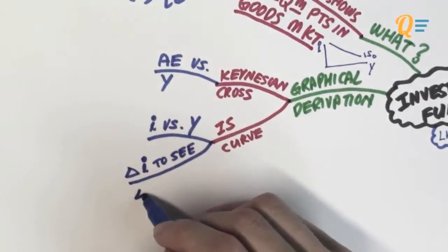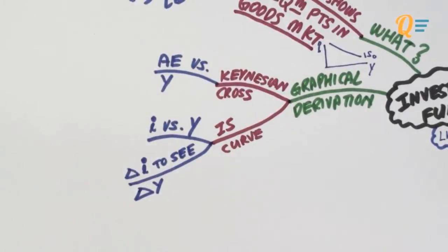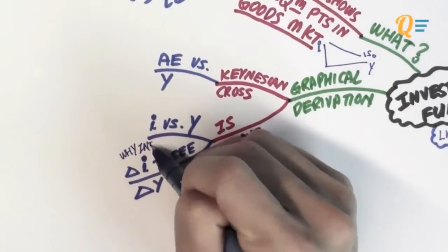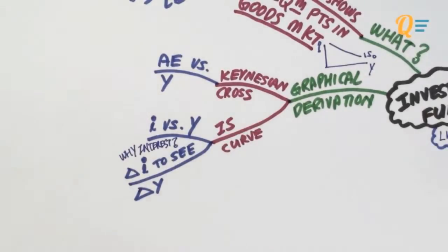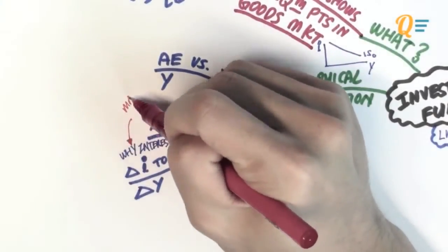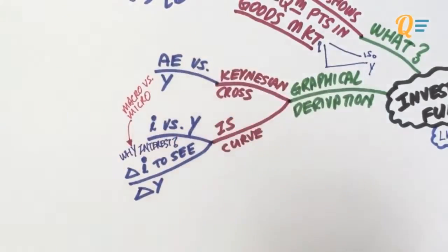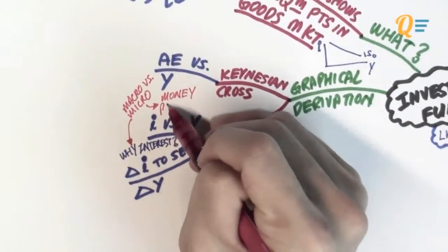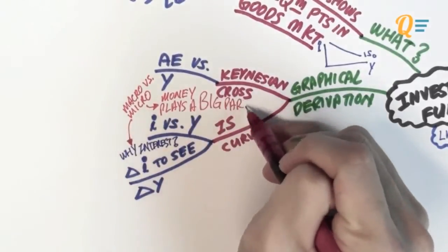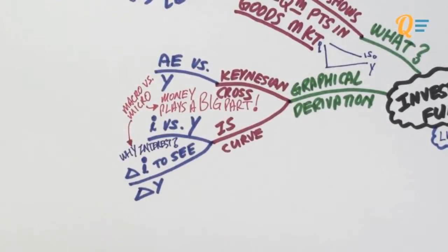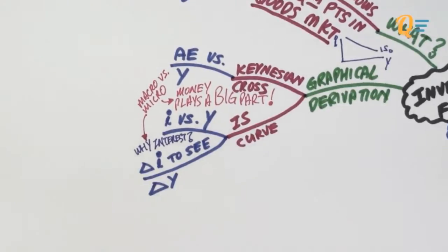And basically what you need to do is to change the level of interest rates to see the change in the income level so that you can actually see the IS curve. So you might be asking, why do we need to analyze interest? Well, that's because we previously discussed that the difference between macroeconomics and microeconomics is that money plays a big part of the story. When there's lending and borrowing activities going on, you have to fall back on the interest rates to talk about the demand and supply of money or what economists like to call loanable funds.